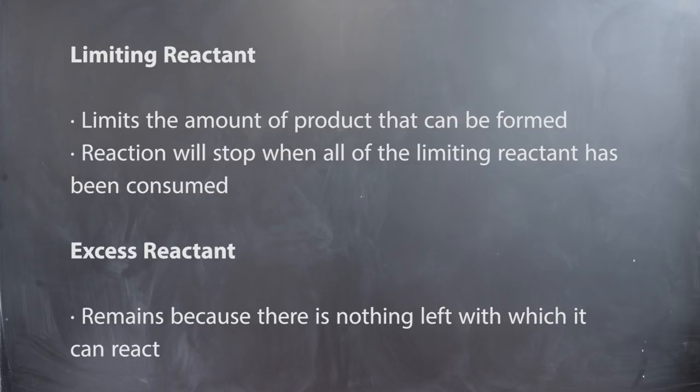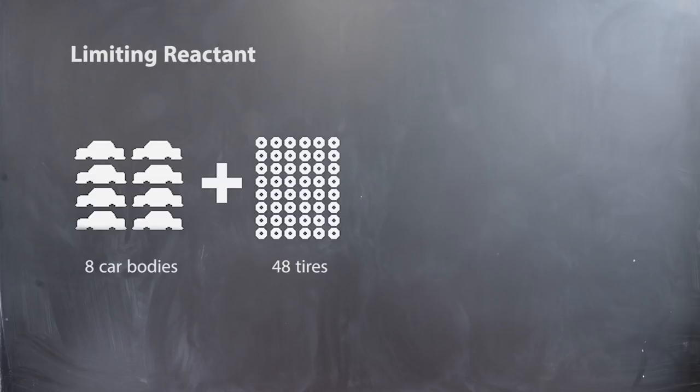Excess reactant remains because there's nothing with which it can react. For example, if we had eight car bodies and 48 tires, how many car combinations could we get?